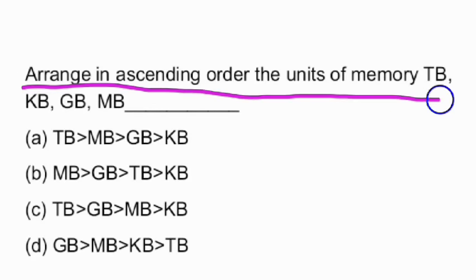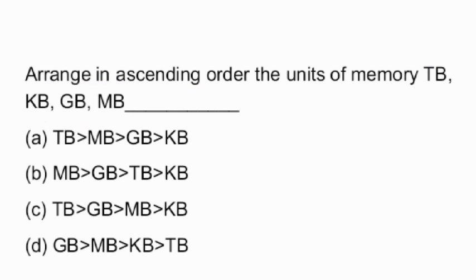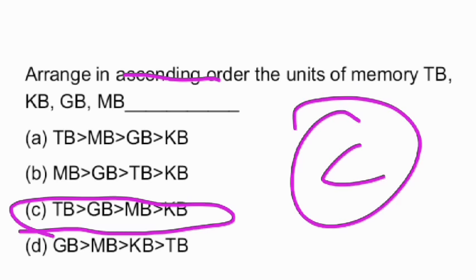Next question: arrange in ascending order the units of memory — TB, KB, GB, and MB. Ascending order means small to big: Kilobyte, Megabyte, Gigabyte, Terabyte. However, the given option C lists TB, GB, MB, KB which is descending order (bigger to small), and option C is marked as the right answer.